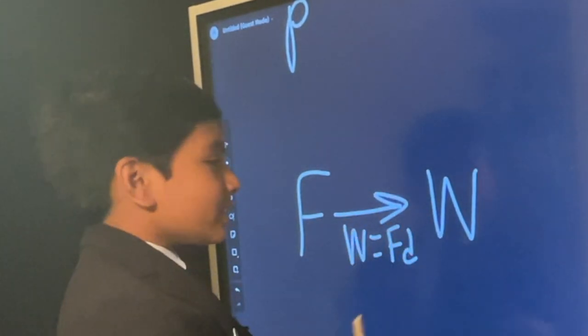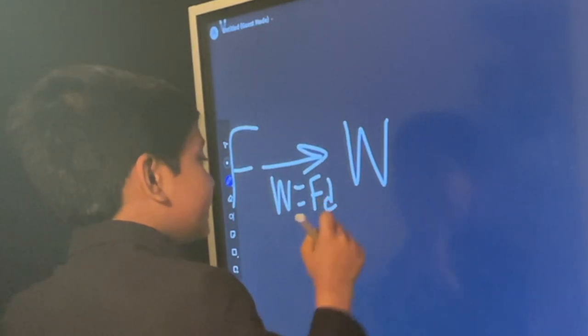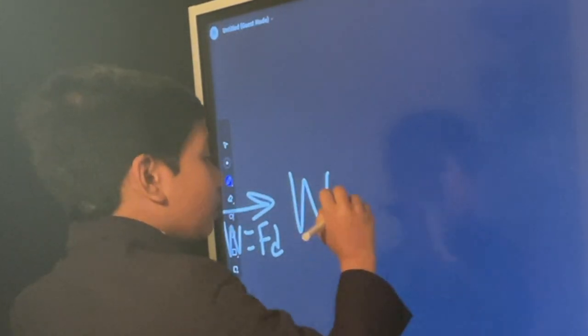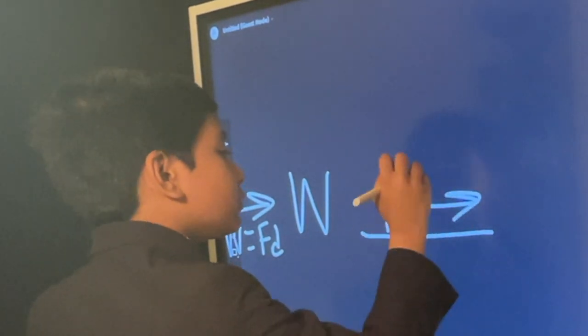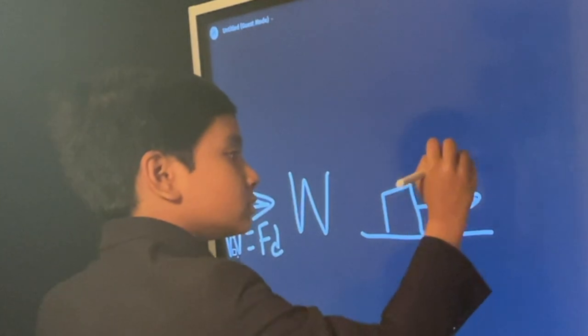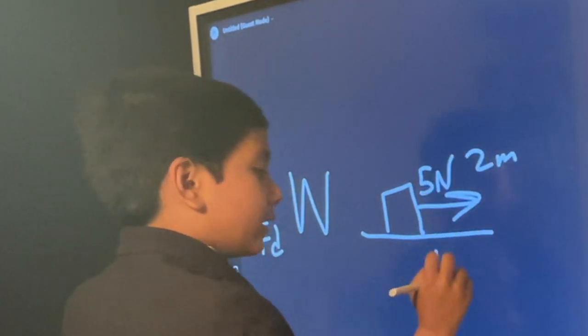You can, in fact, define work as how much force is useful. So for example, if you have a box, you apply 5 newtons to it over 2 meters, then you've done 10 joules of work.